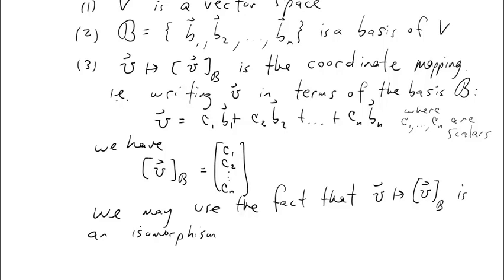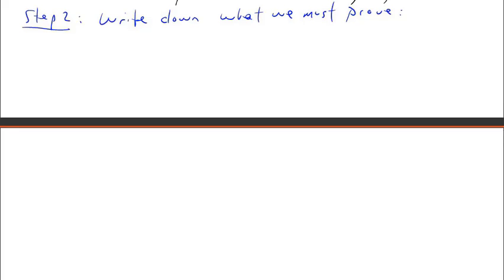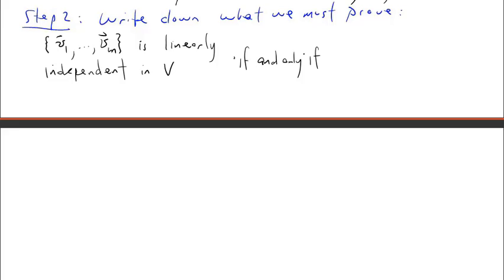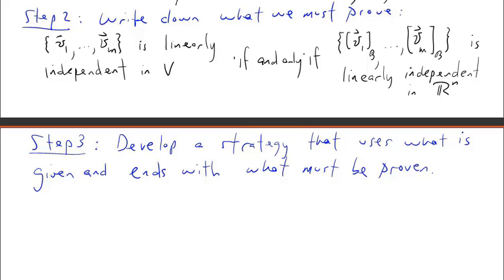We may use the fact that the coordinate mapping is an isomorphism — in other words, it's linear, one-to-one, and onto. We may not have to use all these properties, but we're welcome to use whatever we need. Step two: let's write down what we must prove. Specifically, this set is linearly independent in v if and only if the corresponding coordinate vectors form a linearly independent set in Rn.